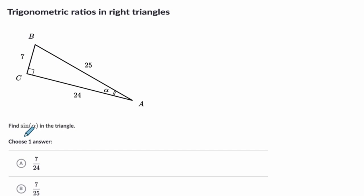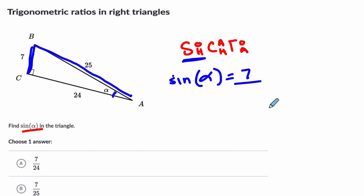Okay, now we want to find the sine of alpha. So I set up my little device to remember, SOHCAHTOA. So we get to the sine, and that tells us that's the ratio of the opposite over the hypotenuse from the angle you're looking at. So I find the angle we're looking at, which is alpha, right here. The opposite side from that angle is here, it's 7, over the hypotenuse here, which is the longest side, 25. So it's 7 over 25, it's choice B.